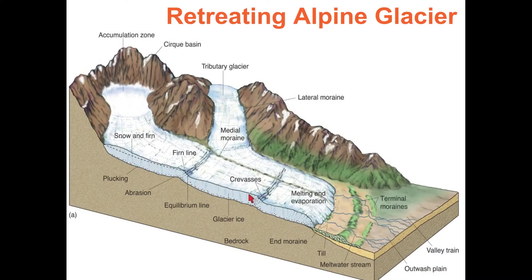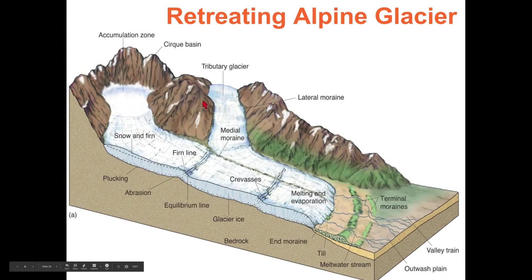Here's another diagram showing the firn line — above it you'd have snow and firn on top of the ice; below it, just ice. We have terminal moraine, recessional moraine, and an end moraine at the end. Lateral moraines on the sides, and medial moraine in the middle.